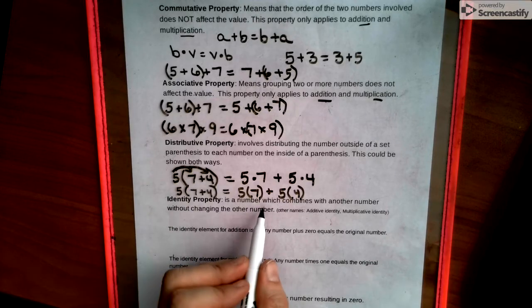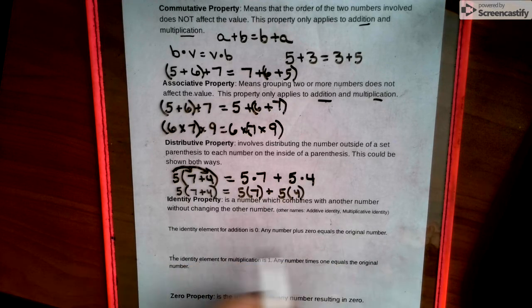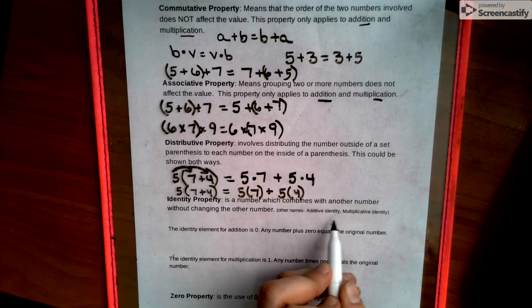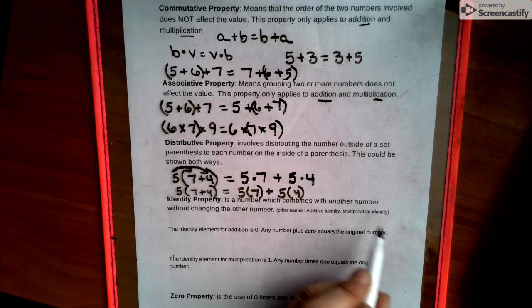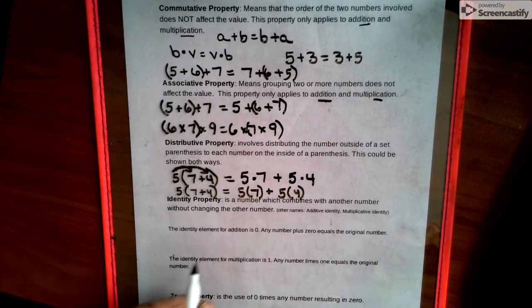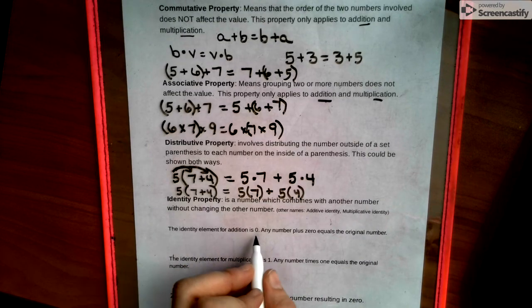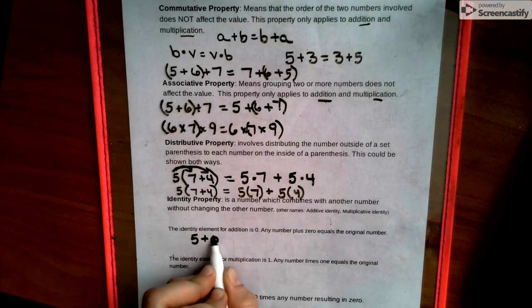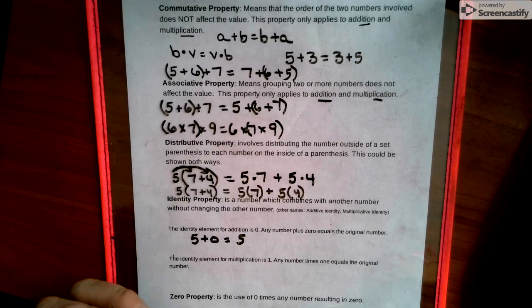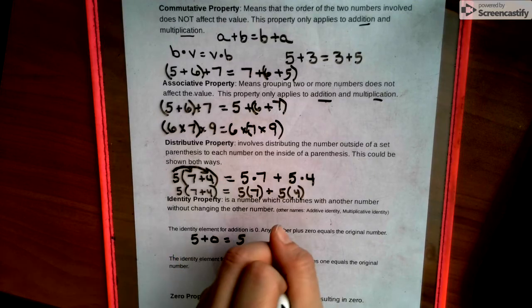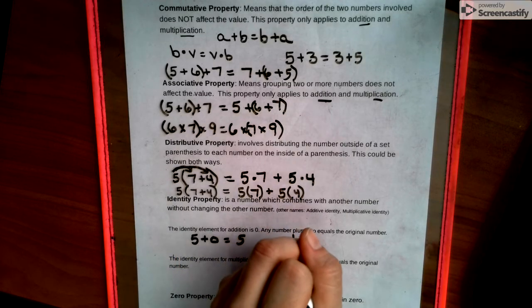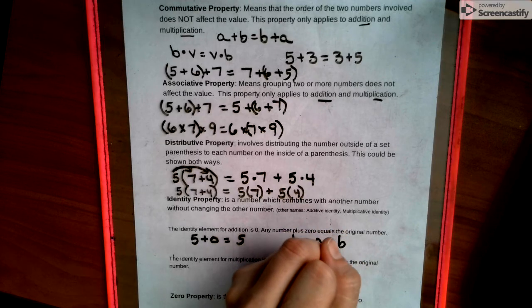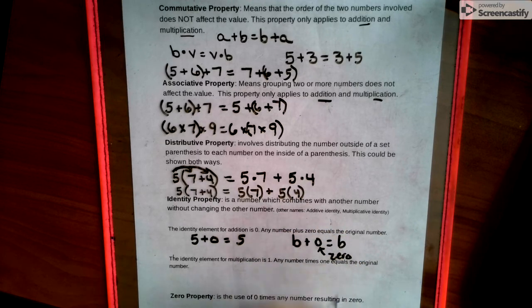Identity property is a number which combines with other numbers without changing the value. Other names are like additive identity, multiplicative identity. These are other names for the identity property. The identity element for addition is zero. That means if I have five and I add nothing to it, I still have five. So we could do it with a letter, b plus zero still equals b. That being a zero, so you know.